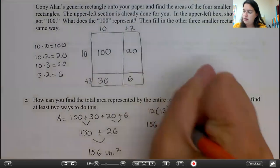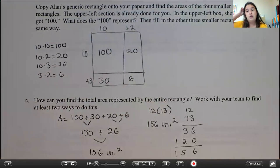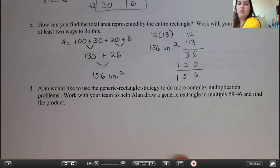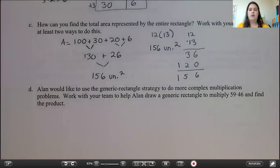So I know that I did it correctly both times. Part D, you're going to get to try this on your own. Alan would like to use the generic rectangle strategy to do more complex multiplication problems. Work with your team to help Alan draw a generic rectangle to multiply 59 times 46 and find the product. So you're going to do this on your own, and then we're going to check it in class. So if you have any questions, go ahead and email me.